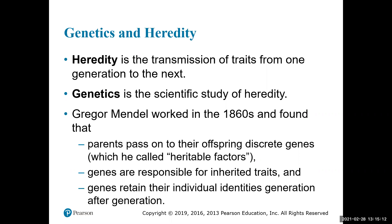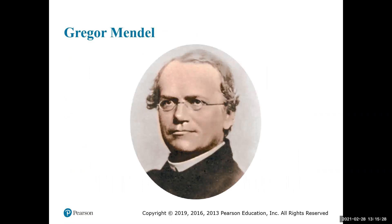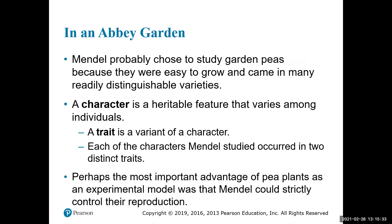Genes basically retain the individual identities we see from generation to generation — that's the actual aspect of the trait that's passed on. Gregor Mendel was an Austrian monk working in a garden who chose to study pea plants, likely because they're easy to grow and come in quite a lot of varieties. Those varieties are very distinguishable from one another, so he could look at specific characters and the various traits within those characters.